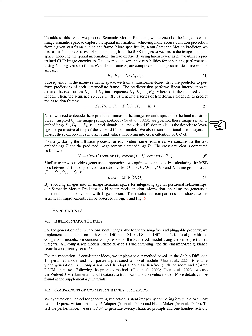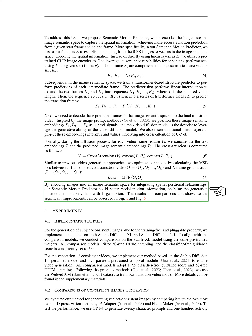To train our model, we optimize it by calculating the mean squared error (MSE) loss between the predicted transition video frames O = (O_1, O_2, ..., O_L) and the ground truth frames G = (G_1, G_2, ..., G_L), to ensure accurate video generation. By encoding images into an image semantic space to incorporate spatial relationships, our semantic motion predictor can better capture motion information, resulting in smooth transition videos with significant motion. The improvements and results demonstrating these enhancements can be seen in the provided figures.